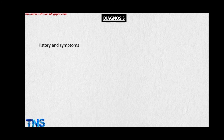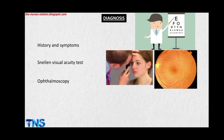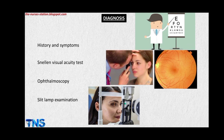To diagnose cataract, we take a history from the patient and note the signs and symptoms. We can use a Snellen visual acuity test, in which visual acuity is examined using a standard Snellen chart. Ophthalmoscopy uses an ophthalmoscope to look into the structures of the eye. Slit lamp examination uses a special microscope with bright light that lets the ophthalmologist check different parts of the eye, such as the cornea, iris, and lens.